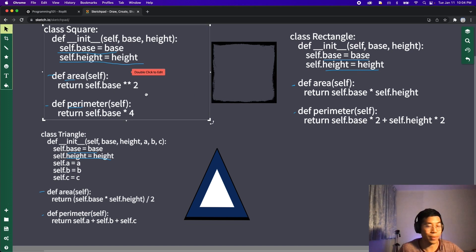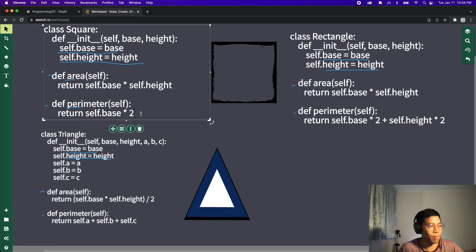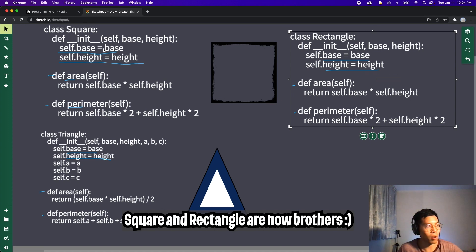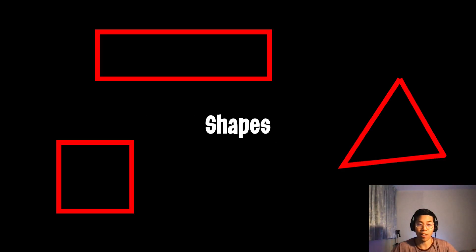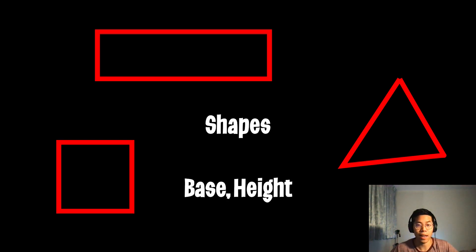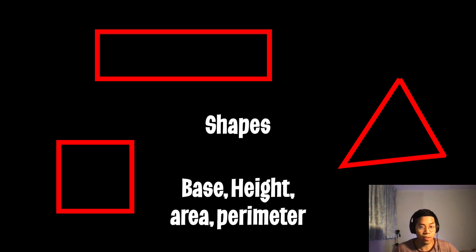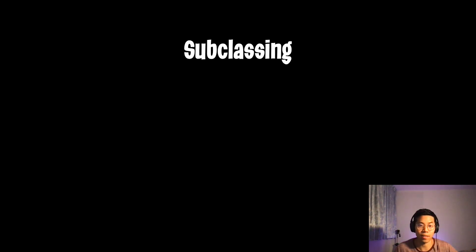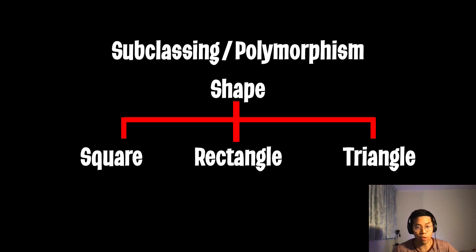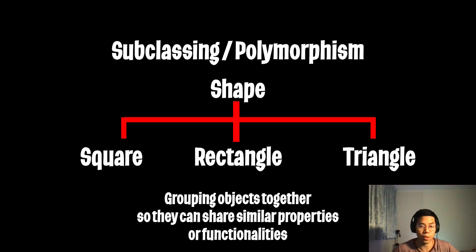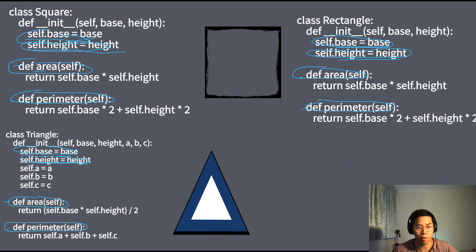We can also update the square so it matches the rectangle. For area, use self.base times self.height. For perimeter, use self.base times 2 plus self.height times 2. Now the square and the rectangle are basically identical — the only difference is their name. Taking a step back, all three objects are basically shapes. They all have common properties: a base, a height, and we can calculate the area and perimeter. So we can clean up a lot of redundant code by subclassing these objects as a shape — this is also known as polymorphism.